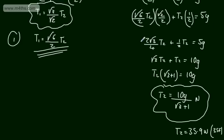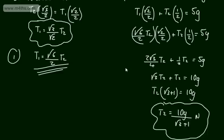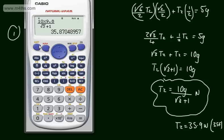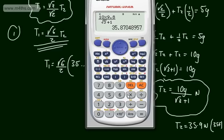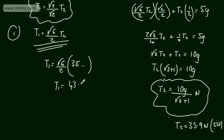Throughout the calculations I was working with exact values — use a calculator as needed. Now finding T1: T1 equals root 6 over 2 multiplied by 35.9..., giving T1 approximately equal to 43.9 Newtons to three significant figures.